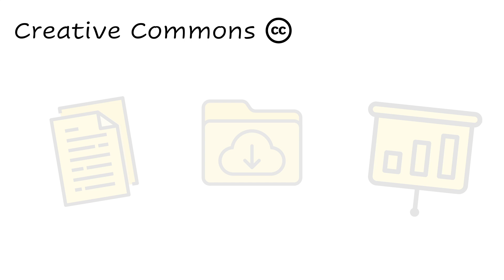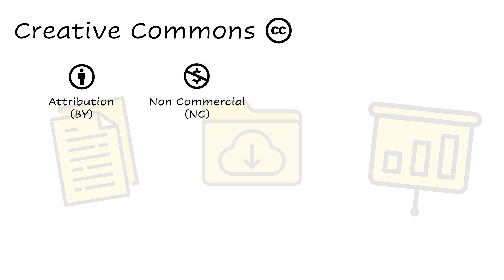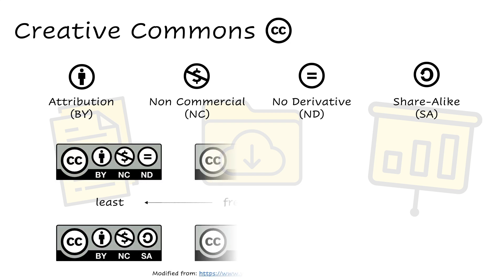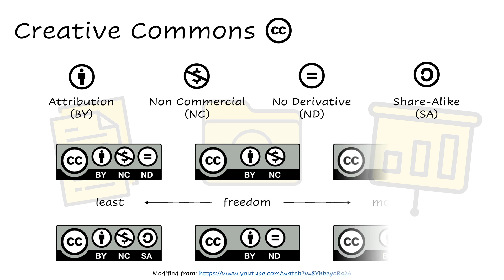The Creative Commons licenses are built upon four concepts, each represented by a symbol: Attribution, which means that anybody using our work has to explicitly mention our name; No Commercial, which means that people using our work cannot make money with it; No Derivatives, meaning anybody using our work cannot modify it; and Share Alike, meaning anybody using our work has to license their creation using the same license we are using. From the combinations of these four symbols, we can assemble six different kinds of licenses.